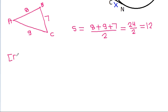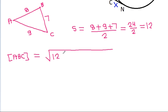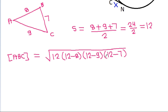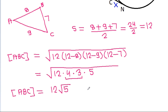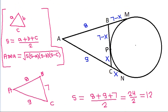So area of triangle ABC it will be equal to the square root of 12 times (12 minus 8) times (12 minus 9) times (12 minus 7). And it is the square root of 12 times 4 times 3 times 5. And 4 times 3 is 12, so it will be 12 times the square root of 5.